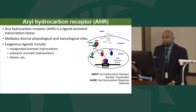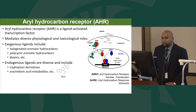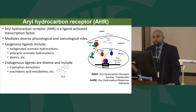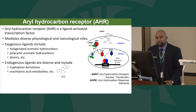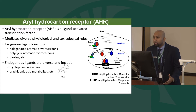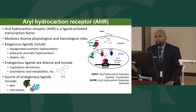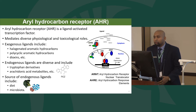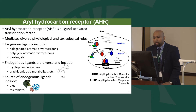There are also an equal number of diverse endogenous compounds, including tryptophan derivatives — one of the most well-studied being FICZ — as well as arachidonic acid metabolites. Sources of these endogenous ligands include diet, such as cruciferous vegetables like broccoli and kale, as well as gut microbiota, which are rich sources of endogenous AHR ligands.